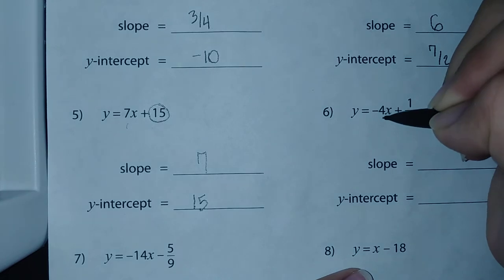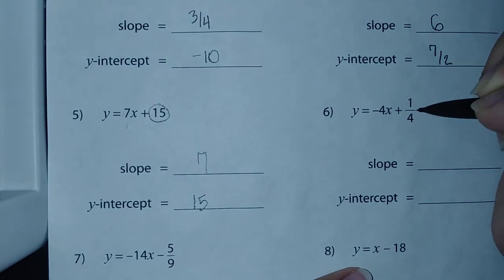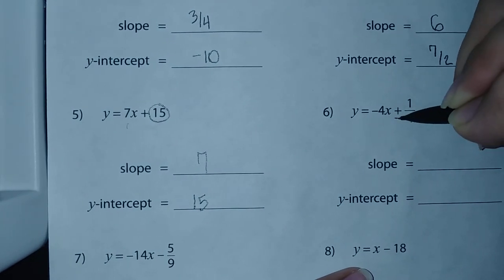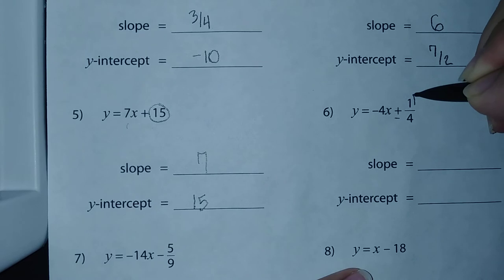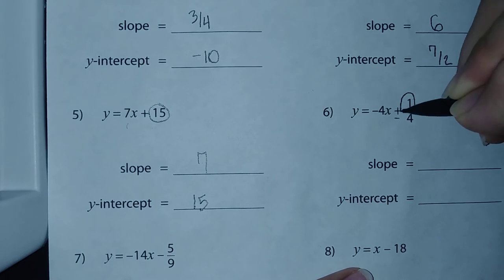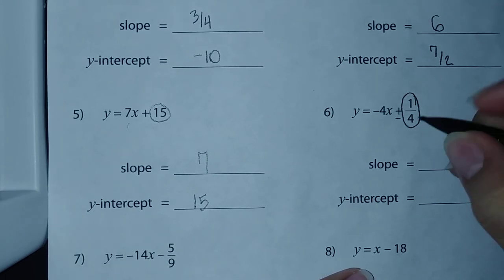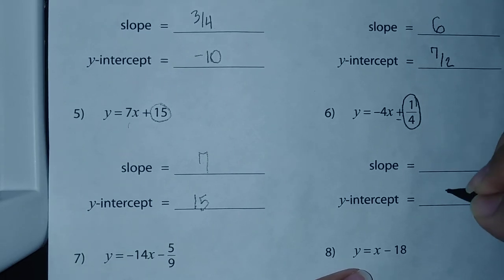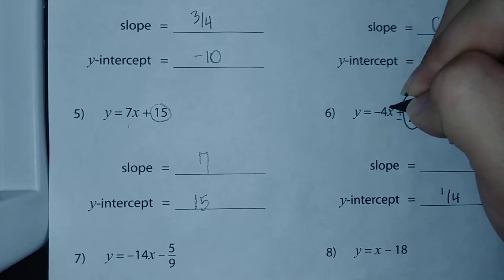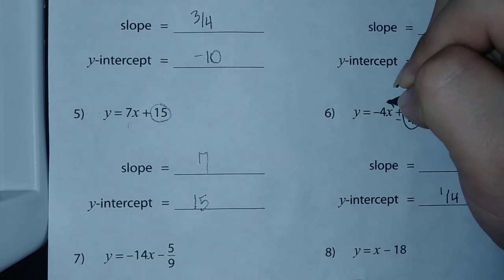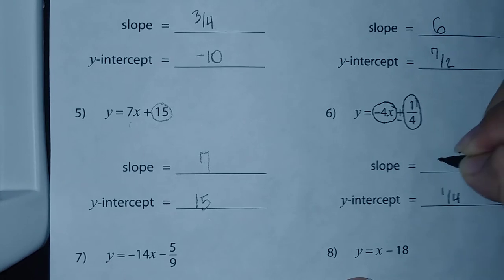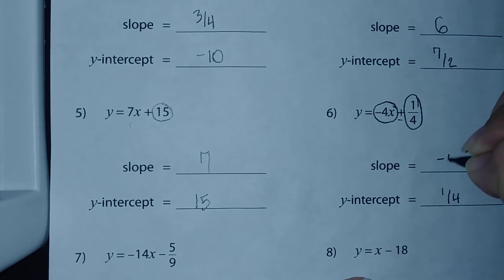Number six: y = -4x + 1/4. We have a plus sign here so this is going to be positive. Our y-intercept is 1/4, and our slope is -4x, which is just -4.